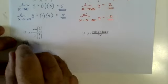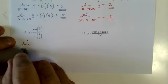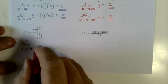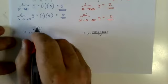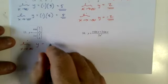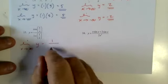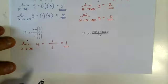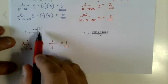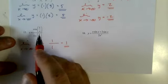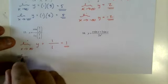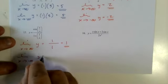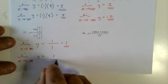Problem 15. Limit as x approaches infinity — that's going to be cosine of 0, which is 1 over 1, just 1. For negative infinity, it turns into 0 as well. So the limit as x approaches negative infinity of y is also 1.